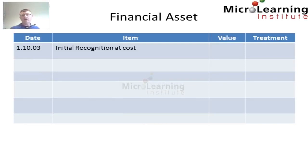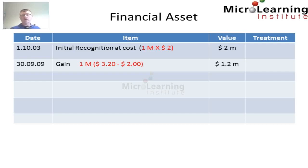Now let's look at how we account for the financial asset and all the transactions that occurred to that financial asset since acquisition. Firstly, on the 1st of October 2003, we initially recognized the financial asset at cost. The cost is 1 million shares at $2 per share, giving us a cost of $2 million. In the period from the 1st of October 2003 to the 30th of September 2009, the financial asset experienced an increase from $2 per share to $3.20 per share. Over that period, we need to recognize a gain of $1.2 million, recognized in other comprehensive income over this period.